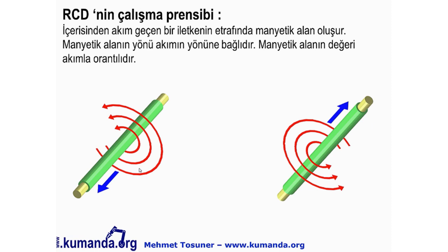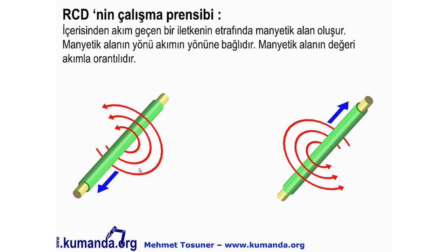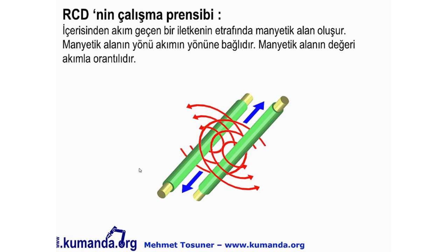RCD'nin çalışma prensibi: içerisinden akım geçen bir iletkenin etrafında manyetik alan oluşur; manyetik alanın yönü akım yönüne, değeri ise akımla orantılıdır. Birbirine ters yönde akım geçirilen iki iletkenin manyetik alanları yan yana getirildiğinde birbirini yok eder — bileşke manyetik alan sıfır olur. RCD'nin çalışma prensibi de budur.